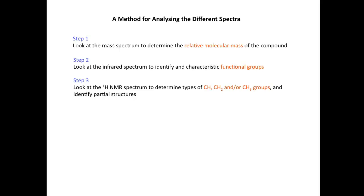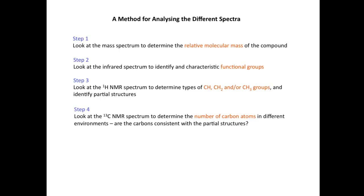In step three, we're going to use the 1H NMR spectrum to determine the types of CH, CH2, and/or CH3 groups that are present in the molecule, and help us identify partial structures or fragments. In step four, we're going to use the 13C NMR spectrum to determine the number of carbon atoms in different environments, and make certain that the carbon atoms are consistent with the partial structures identified from step three.